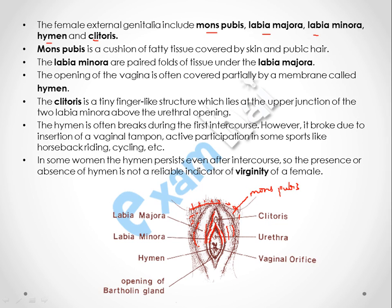The point where the labia minora join is called the clitoris. The role of the clitoris is similar to the penis — at the time of intercourse it becomes erect. The vagina has a covering membrane called the hymen, which often breaks down during the first intercourse. However, it can also break down after certain sports activities like horse riding and cycling. Therefore, the presence or absence of the hymen is not a reliable indicator of virginity in females.